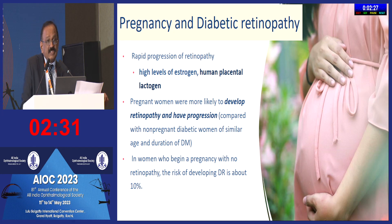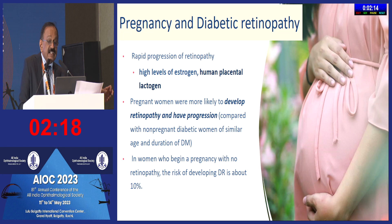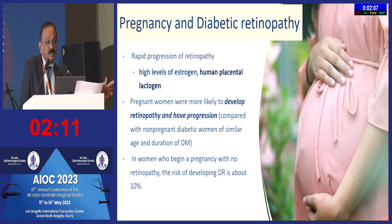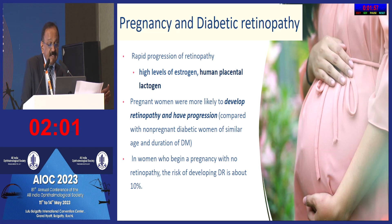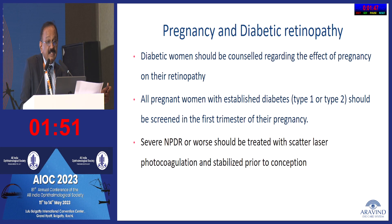Pregnancy is a definite risk factor, especially for known diabetics. High levels of estrogen and other hormones during pregnancy can cause progression of retinopathy. Diabetic patients who become pregnant are more likely to develop or worsen diabetic retinopathy compared to non-pregnant diabetics of the same age. In women who begin pregnancy with no evidence of retinopathy, the risk of developing diabetic retinopathy during pregnancy is about 10%.